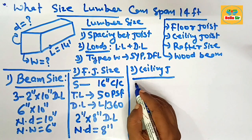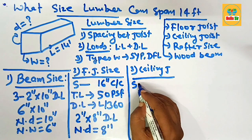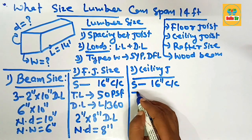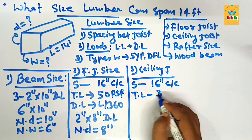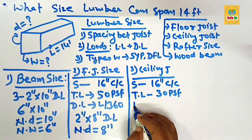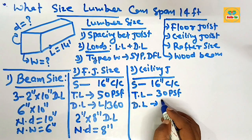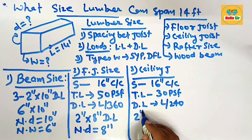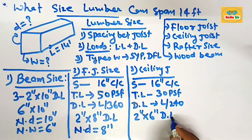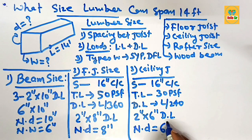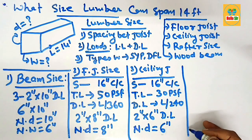For the ceiling joist size required to span 14 feet, the conditions are: spacing of 16 inches on center, a total load of 30 pounds per square foot consisting of dead load and live load, and a deflection limit of L/240. You can use 2-inch by 6-inch dimensional lumber as the ceiling joist, with a nominal depth of 6 inches.